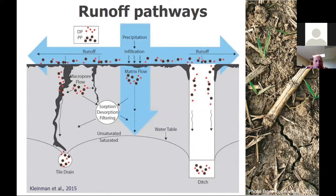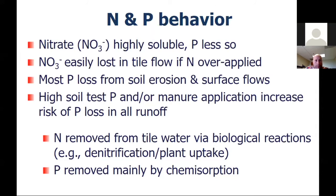Macropore flow is much more common in finer textured soils — clays and silty clays. There's also matrix water flow, which is movement through small pores. That water movement is much slower and much more effective for removing phosphorus, because there's more time for adsorption reactions to occur and remove the phosphorus before the water reaches the tile drain.